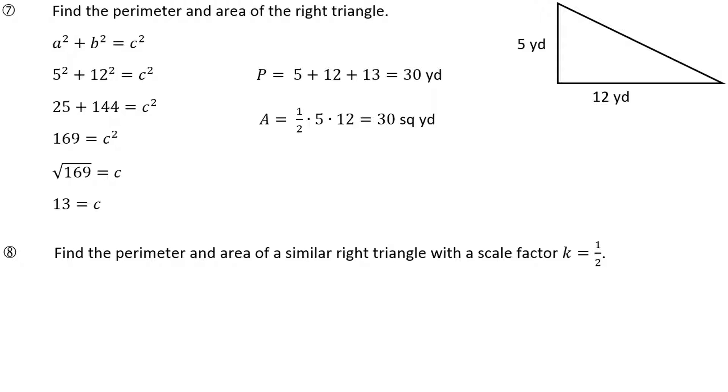Scale factor one half, multiply the original perimeter by one half. Multiply the original area by one half squared, so I have to do one half times one half, which is one fourth. And interestingly enough I come up with a decimal. 30 over 4 reduces to 15 over 2. 15 over 2 would be 7 and a half or 7.5. Again, the diagram had labels for the units, so I'm using the units.